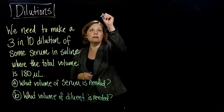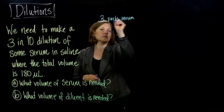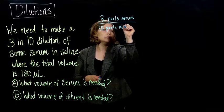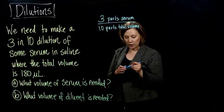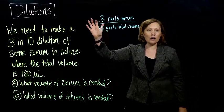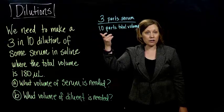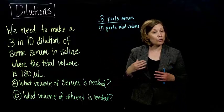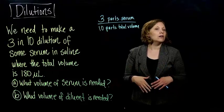So when we say 3 parts serum to 10 parts total volume, what we really have here is a fraction. So this is one way we think about fractions. A fraction is the parts over the amount it takes to make a whole. So here we have it takes 10 parts to make a whole and we have 3 parts of that are serum. So 3 tenths of our total volume is going to be serum.